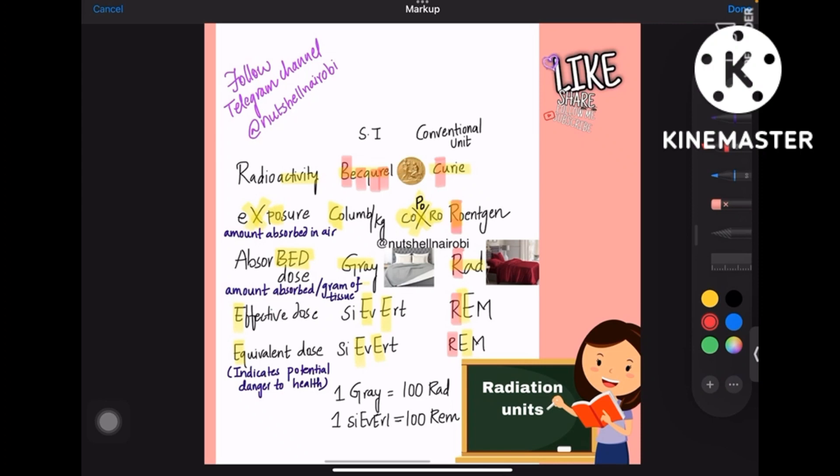Now coming to the definitions of few terms. Exposure means amount of radiation absorbed in air, whereas absorbed dose is amount of radiation absorbed per gram of tissue. This is in air and this is per gram of tissue or material. Coming to equivalent dose, it indicates the potential danger to health.